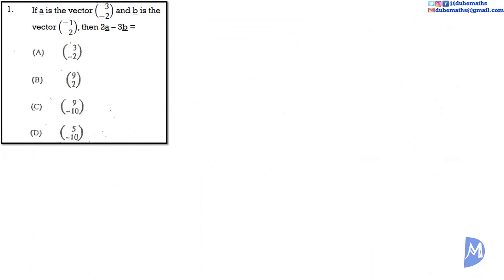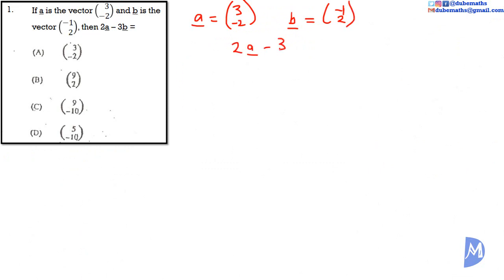Question 1. The vector A is equal to (3, -2). The vector B is equal to (-1, 2). Therefore, 2A minus 3B is equal to 2 multiplied by (3, -2), minus 3 multiplied by (-1, 2).